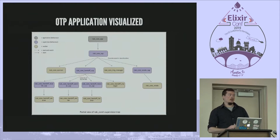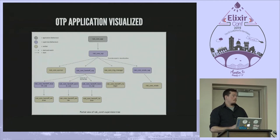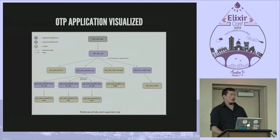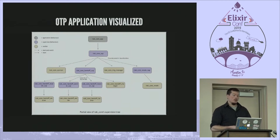Another thing to keep in mind is the difference between process-based applications and library applications. They're effectively the same thing from Erlang's point of view as far as defining them — you're still defining the name and version, they're explicit dependencies. The only difference is the life cycle. Library applications are just exporting modules with functions that you call, but there are no processes within them.